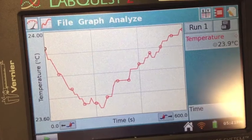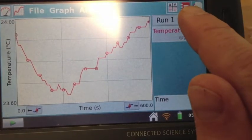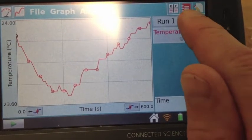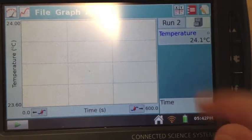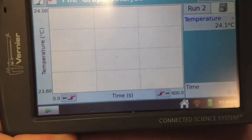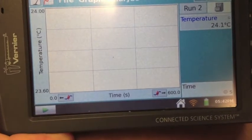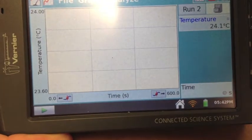When you're ready to start the next run, tap the file cabinet icon to save run one, and now you're on run two. Whenever you hit play, it's going to start collecting the second run of data, but it won't have forgotten about the first.